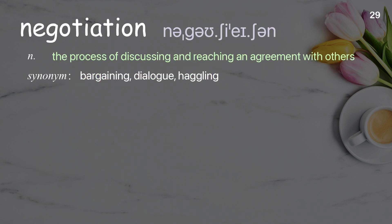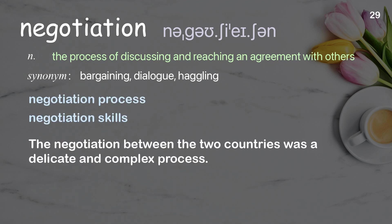Negotiation — the process of discussing and reaching an agreement with others. Examples: negotiation process, negotiation skills. The negotiation between the two countries was a delicate and complex process.